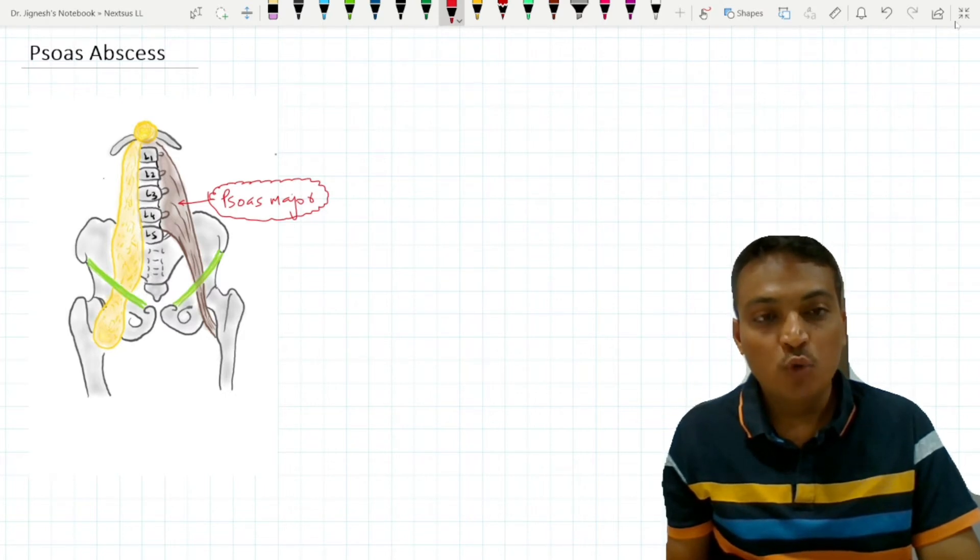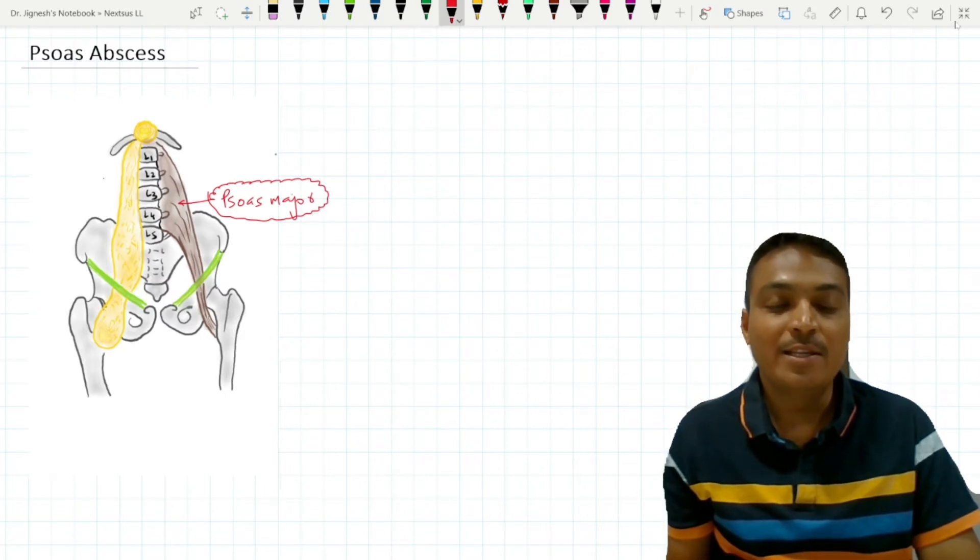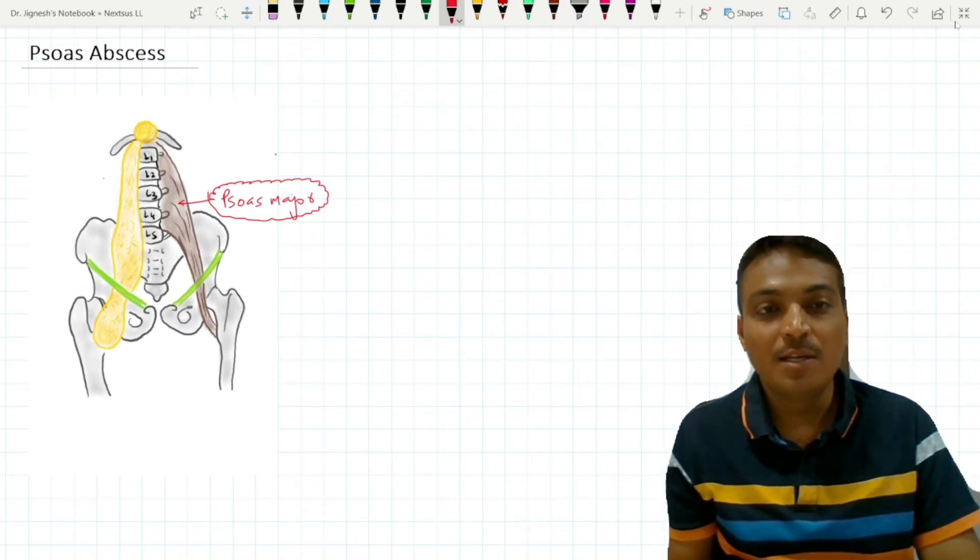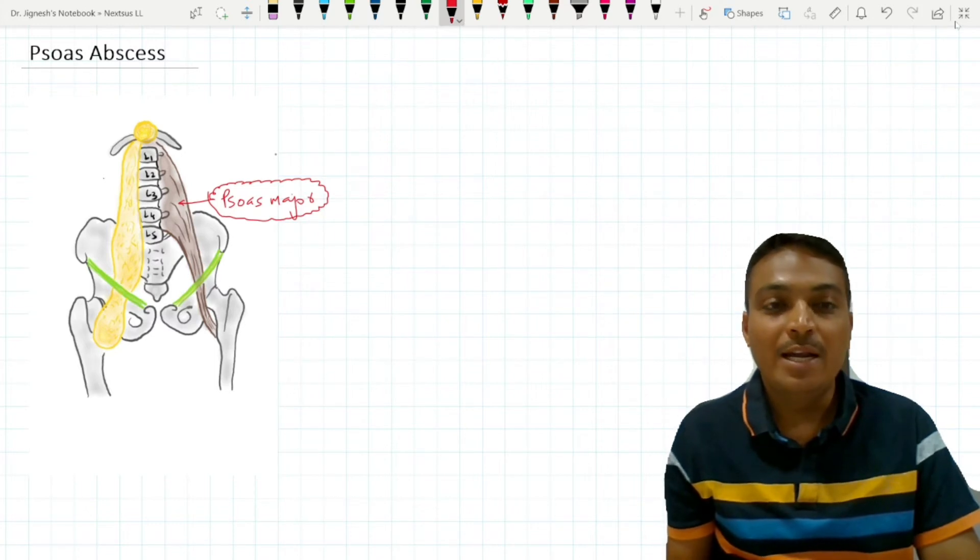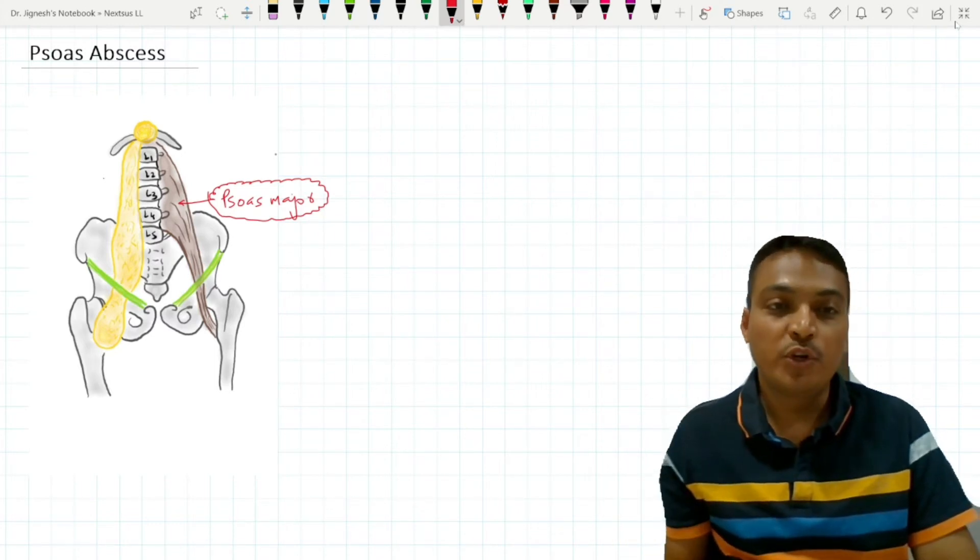The psoas major muscle is enclosed within one fascial sheath which is derived from the lumbar fascia. But this fascial sheath around the psoas major muscle is open above and it is going to communicate with the posterior mediastinum.